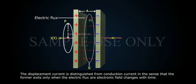The displacement current is distinguished from conduction current in the sense that the former exists only when the electric flux or electric field changes with time.